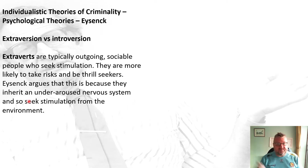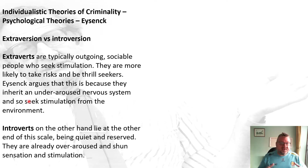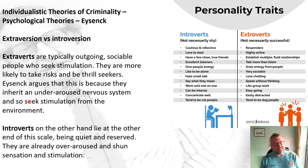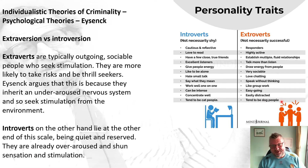Introverts, on the other hand, lie completely at the other end of the scale. They're quiet, reserved, and already over-aroused — their nervous system is over-aroused — so they don't need that sensation and stimulation. You can see personality traits linked to extroversion and introversion here; interestingly, introverts apparently tend to be cat people whereas extroverts tend to be dog people.